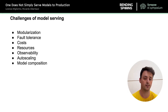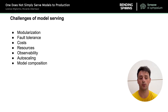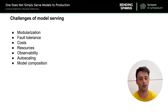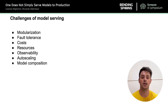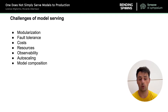Second, fault tolerance: we want our system to continue operating properly in the event of failures of one or more of its components. Then costs — costs are very important in a model serving tool since machine learning models typically need a lot of resources: CPU, RAM, GPU, to be able to return a prediction in a short time. We want to keep costs down as much as possible.